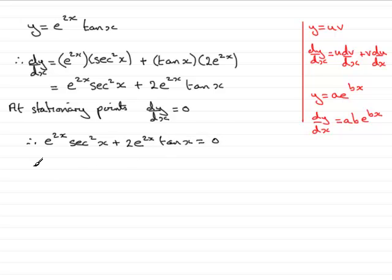And to solve this, what I need to do is factorize it. And we've got e to the 2x, which is a common factor. So, pull it out the front of a bracket, and then we'd have sec squared x plus 2 tan x would equal 0.